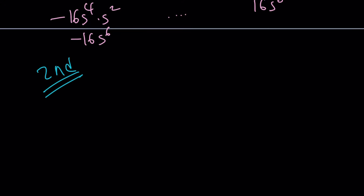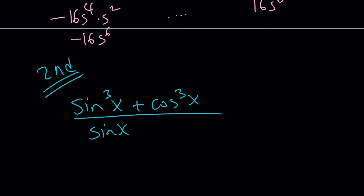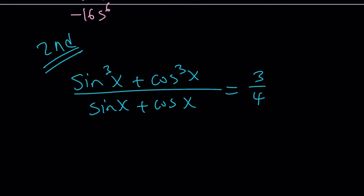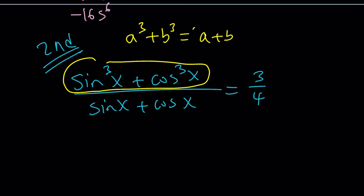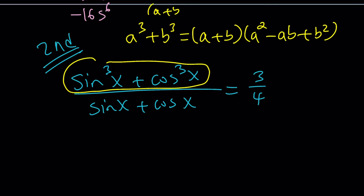Let's take a look at the second method. Sometimes you may want to turn this into a cubic or quadratic and solve from there, but here's what we're going to use instead. Let me write the original problem: sine³x plus cosine³x divided by sine x plus cosine x equals 3 over 4. One thing you should always remember is the sum of two cubes: a³ plus b³ equals (a plus b)(a² minus ab plus b²).